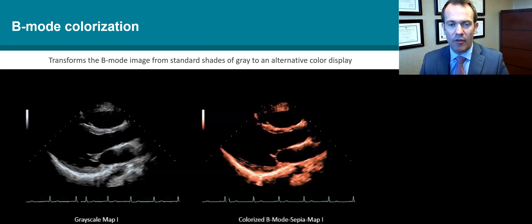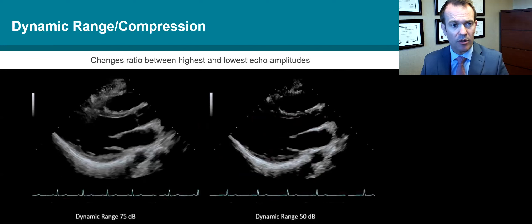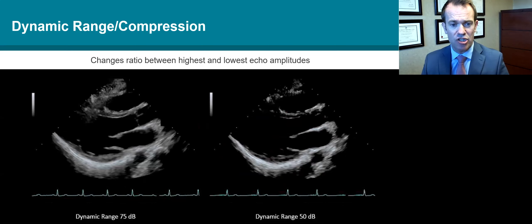Moving on to some of the settings and instrumentation on our machine, one of these is the grayscale maps. Some people like to colorize this map and view images in different colors such as sepia. It's important to note that the information displayed does not change — it's more the perception of the viewer. Dynamic range or compression changes the ratio between the highest and lowest amplitude echo. A low dynamic range gives a very black and white image, while a high dynamic range gives multiple more shades of gray.